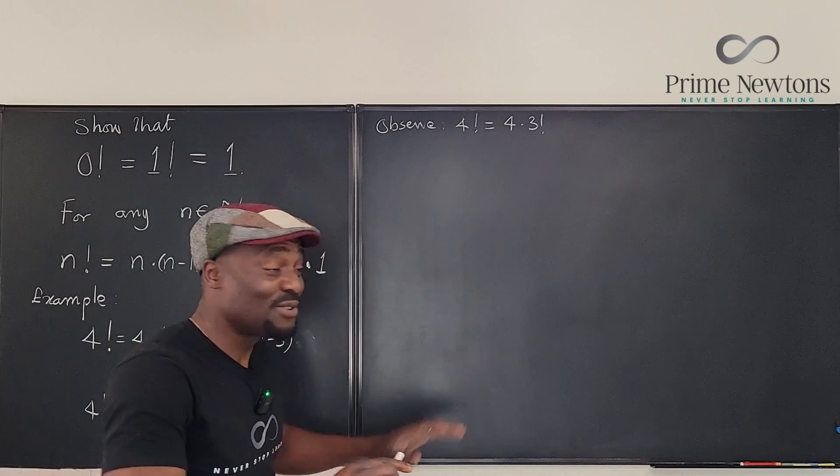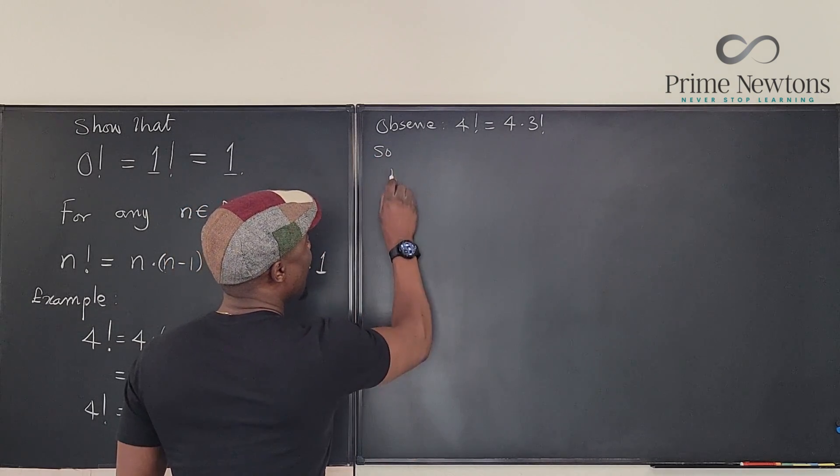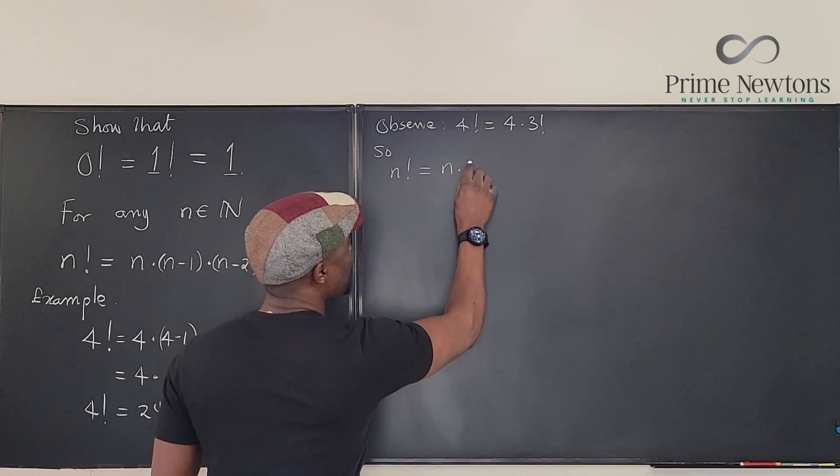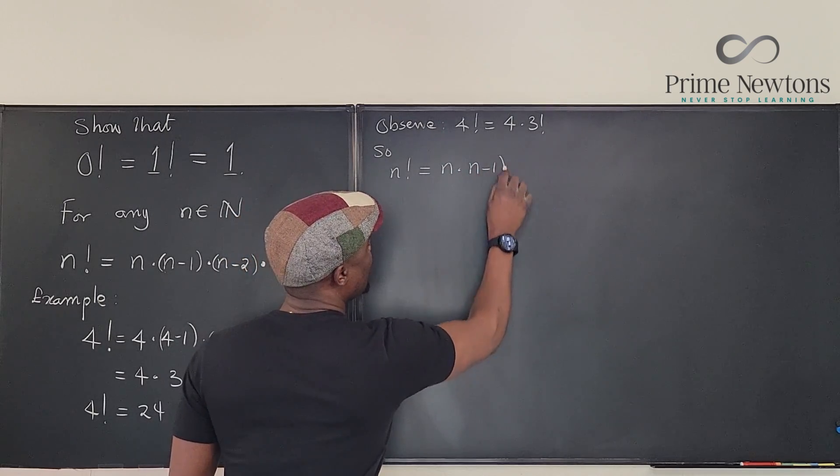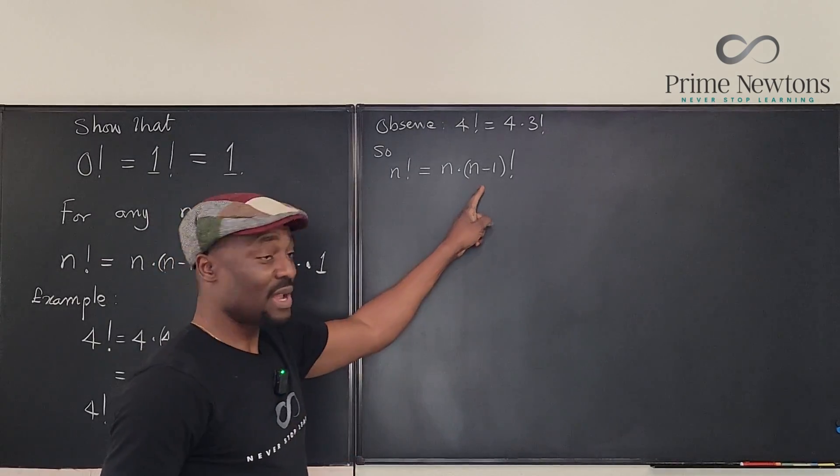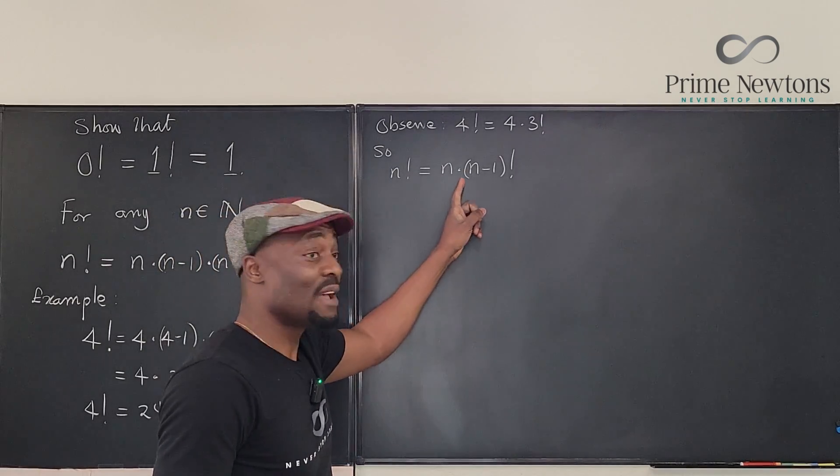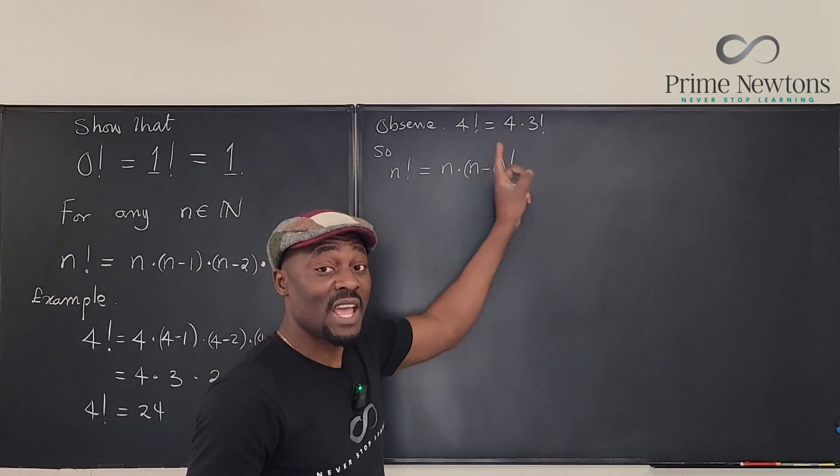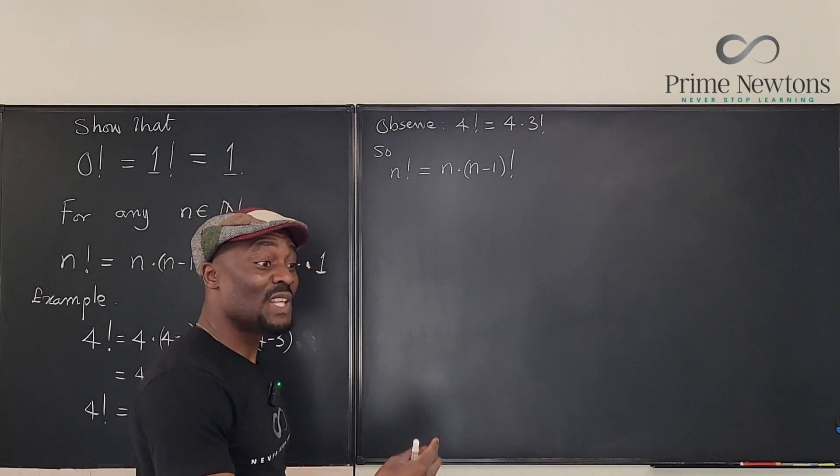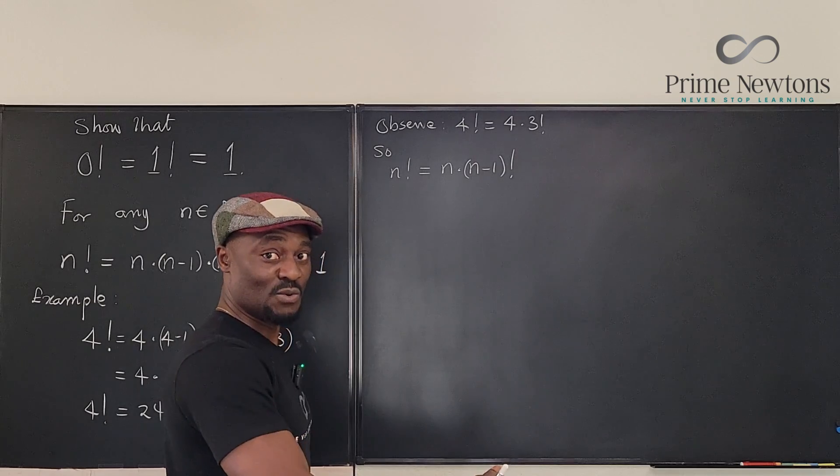So generally we know that n factorial is generally just n times n minus 1 factorial. And if you want to break this down, you can say it is n times n minus 1 times n minus 2 factorial. Now the factorial belongs to the last digit you wrote. It does not belong to everybody.